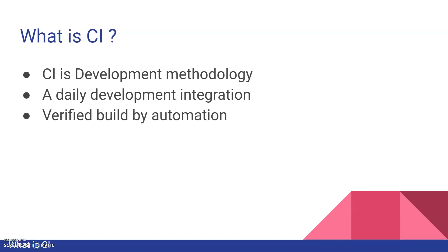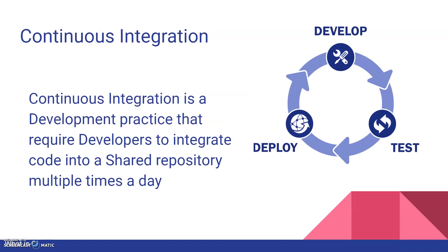CI is a daily development integration methodology where whatever code you write daily should be integrated into a common repository. Once you do the common repository integration, it should be verified by automation and your code should be in a proper way. The formal definition: continuous integration is a development practice that requires developers to integrate code in a shared repository multiple times a day.